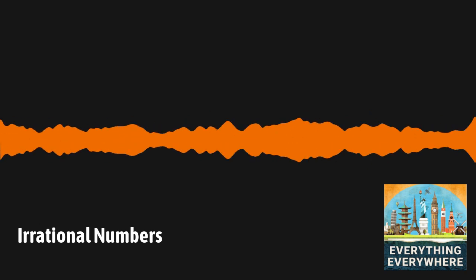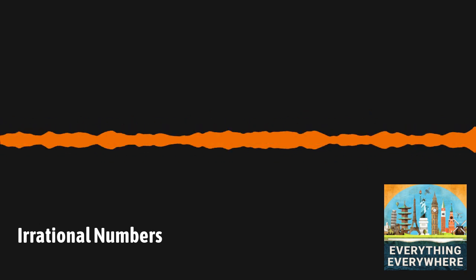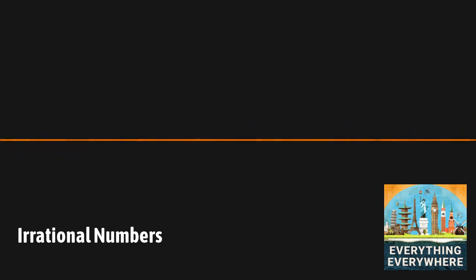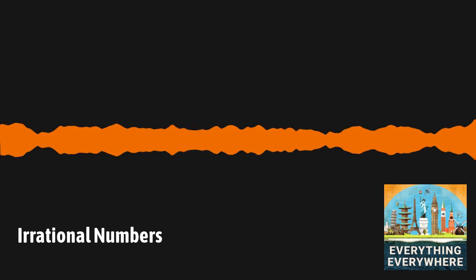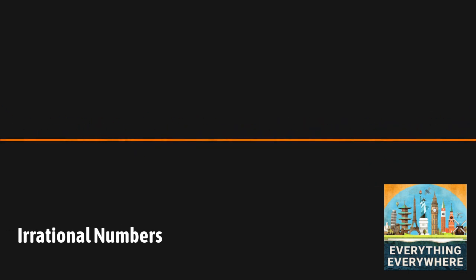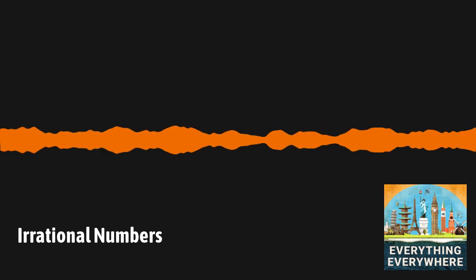There's a particular type of number that is so common that we have keys on our modern calculators to handle them. However, thousands of years ago, their discovery was so upsetting to one group that it may have led to the destruction of their religion and possibly the murder of the man who made the discovery.